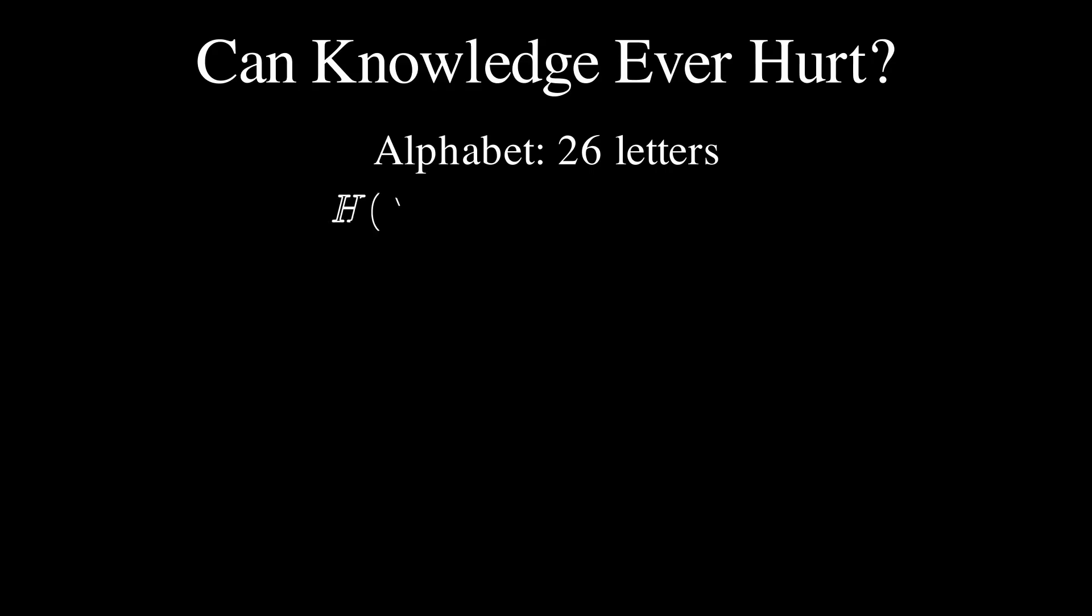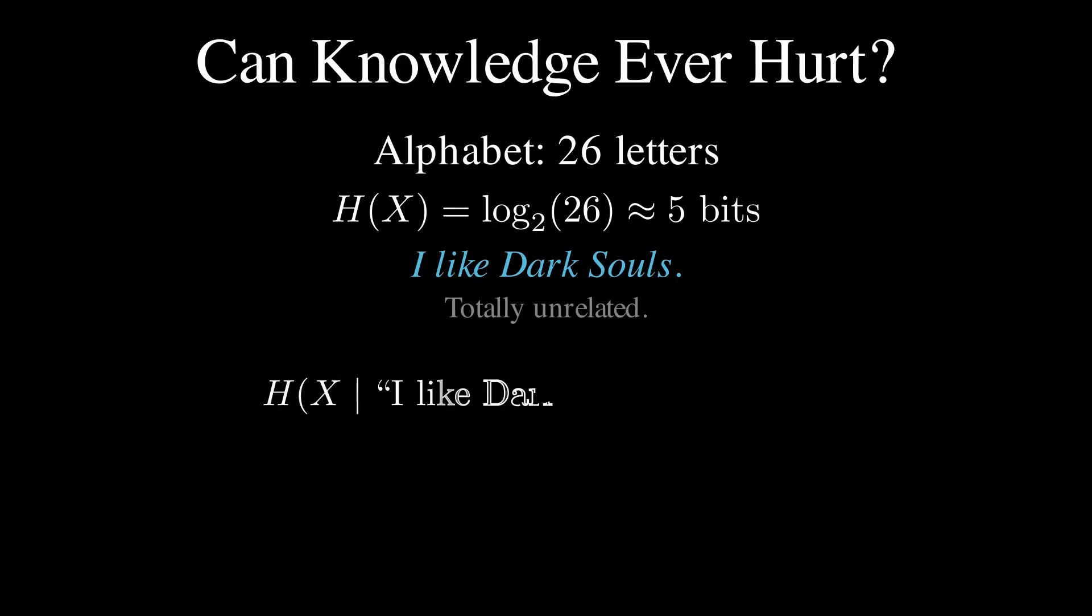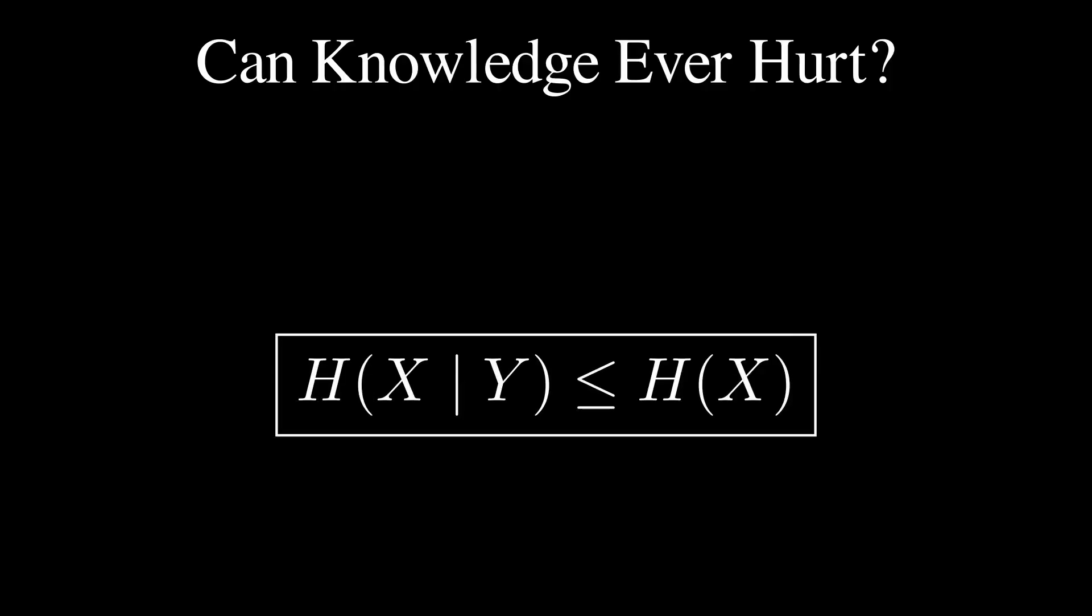Take the example of trying to figure out a letter in the English alphabet. We already know that it would take around 4.7 bits round up. That's 5 bits. Now if I told you that I like Dark Souls. Does that help you figure out which letter it is? It doesn't. But is it harmful? No. It's simply irrelevant. It doesn't help. It doesn't hurt either. The clue might be useless but it does not add uncertainty. That's why this inequality is always correct.